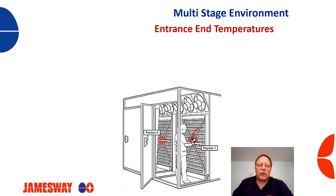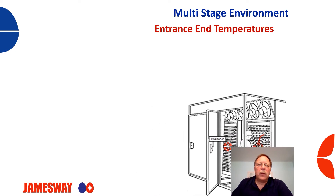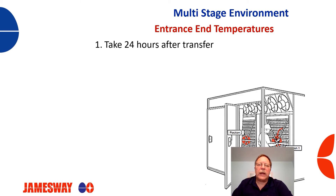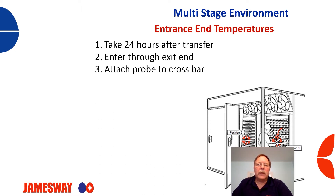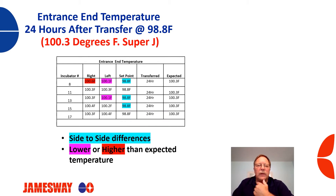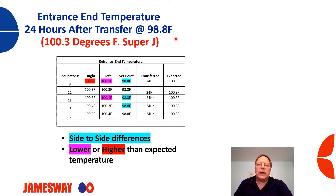For our entrance end temperatures or crossbar temperatures, just for a slight review: we want to make sure we take these 24 hours after transfer, that we enter through the exit end as this is less disruptive to airflow. We attach the probe to the crossbar — you can review that process in our previous training video — and we record the temperatures. Here's an example of collected data. Side-to-side differences are highlighted in blue, lower temperatures in purple, and higher than expected temperatures in red. Our expected temperature should be 100.3°F in a Super J machine with a set point of 98.8°F.